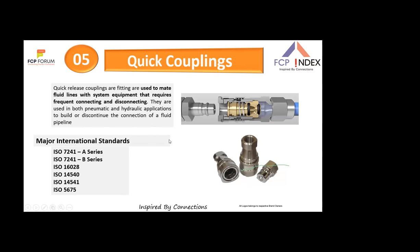Quick couplings are used in fluid linkage systems that require frequent connection and disconnection. Types include single check valve, double check valve, flat face couplings, and screw couplings. Major international standards are ISO 7241 Series A and B, ISO 16028, ISO 14540, ISO 14541, and ISO 15675. One end must always be flexible — that is a fundamental requirement.